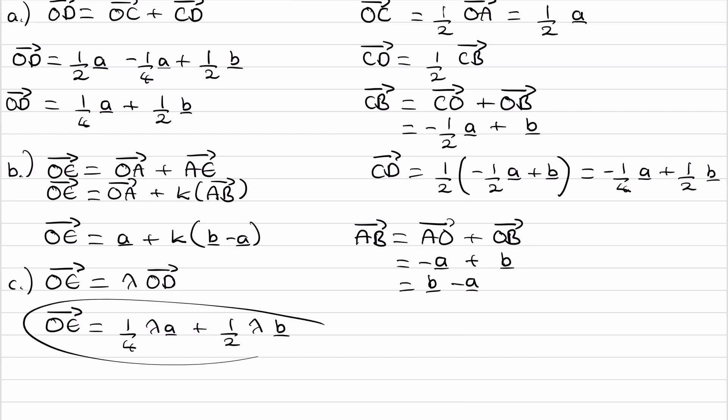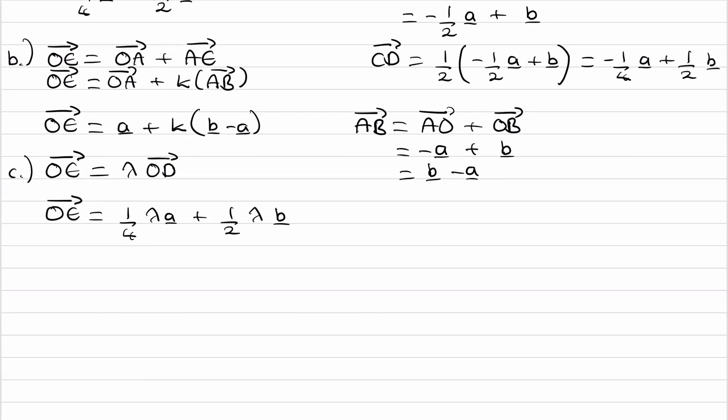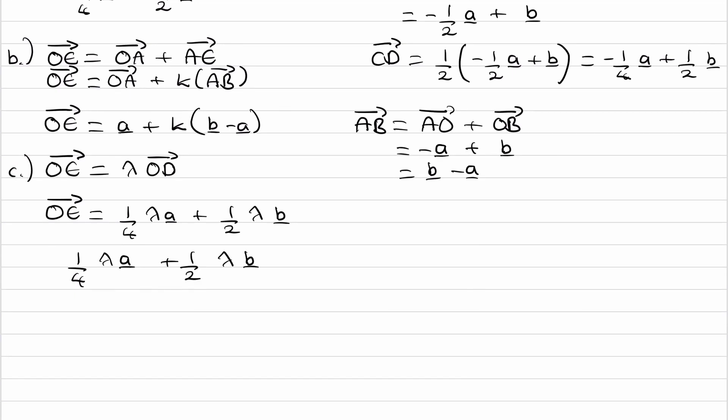This is another way that we can write OE. We've taken a different path to get there. This is the original way. We can equate those two things, they must be equal. So a quarter lambda A plus a half lambda B is equal to, I'm going to multiply this out, so this will be A plus KB minus KA.